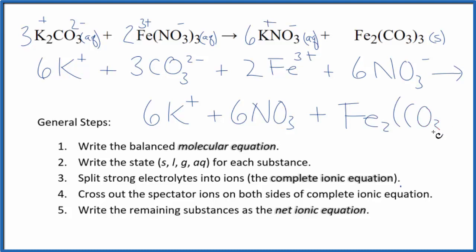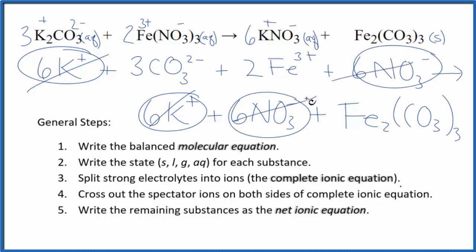Now we can cross the spectator ions out and we'll have our net ionic equation. So on both sides here, I see in the reactants and the products, I have six potassium ions. I also have six nitrate ions. Those can cross out as well. And this leaves the net ionic equation for K2CO3 plus Fe(NO3)3.